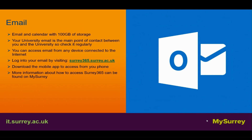Email and calendar provide you with 100 gigabytes of storage. Your university email is the main point of contact between you and the university, so please check it regularly. You can access email from any device connected to the internet. Please log in to your email by visiting surrey365.surrey.ac.uk. You can download the mobile app to access from your phone. For more information about how to access Surrey 365, visit My Surrey.